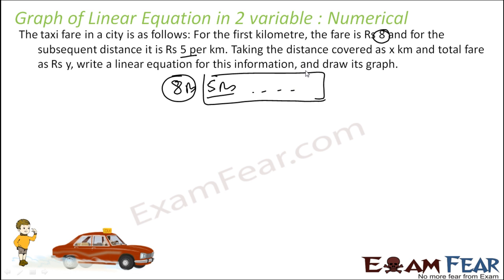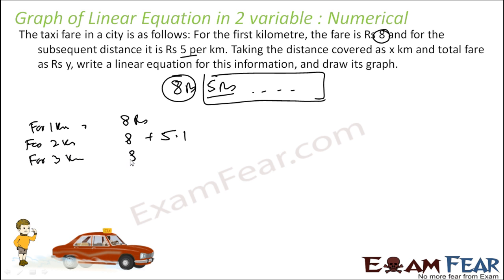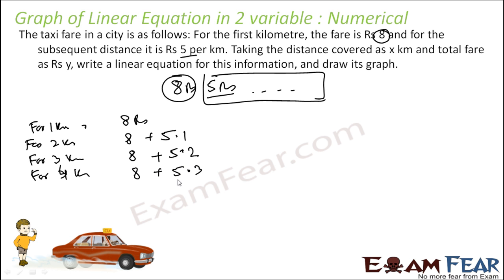For 1 kilometer, this is 8 rupees. For 2 kilometers, 8 plus 5 into 1. For 3 kilometers, 8 rupees for the first kilometer and 5 rupees for 2 kilometers. For 4 kilometers, the cost is 8 rupees for the first kilometer and 5 rupees per kilometer for the next 3 kilometers. For 5 kilometers, 8 rupees is fixed for the first kilometer and the next 4 kilometers is 5 rupees each. That is the kind of relations you will get.